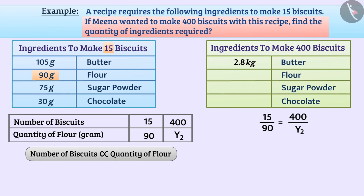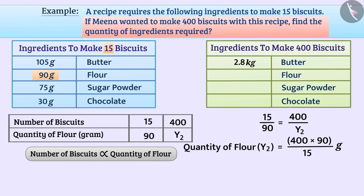Therefore, the quantity of flour, y2, is equal to 400 multiplied by 90 divided by 15 grams, which equals 2400 grams, equal to 2.4 kilograms.